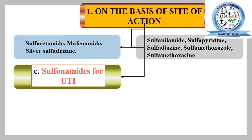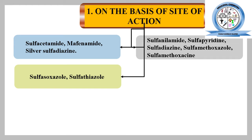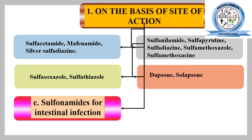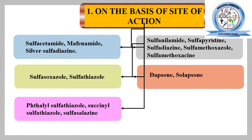Sulfonamides useful only for urinary tract infection include sulfisoxazole and sulfathiazole. Sulfonamides useful for dermatitis infection include dapsone and disolepsone — dapsone being a well-known drug of choice for leprosy. Sulfonamides useful for intestinal infections include phthalylsulfathiazole, succinylsulfathiazole, and sulfasalazine.